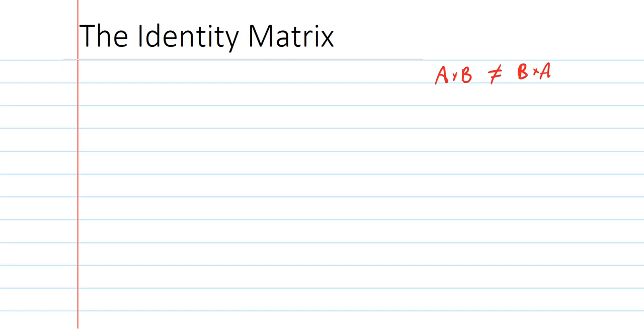It's pretty easy to show that just if you think in terms of order. So if A is a 2 by 3 matrix and B is a 3 by 4 matrix, when you multiply them together, the answer is going to end up being a 2 by 4 matrix. And you can multiply them together because the columns from the first one are equal to the rows from the second one.